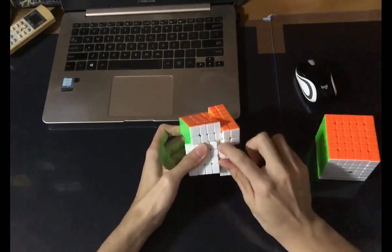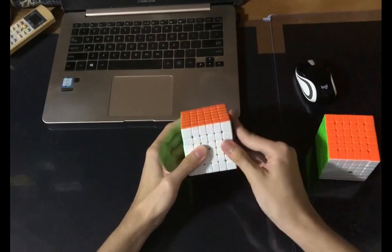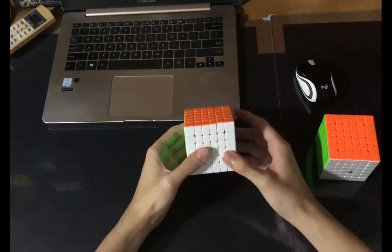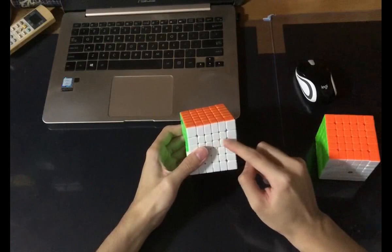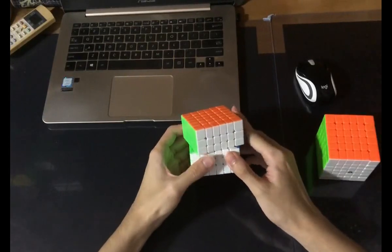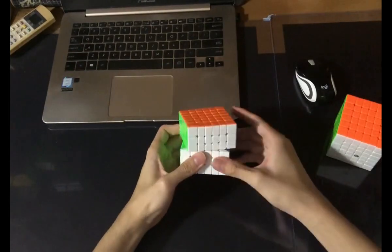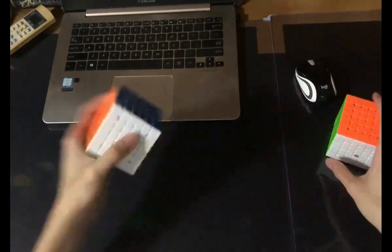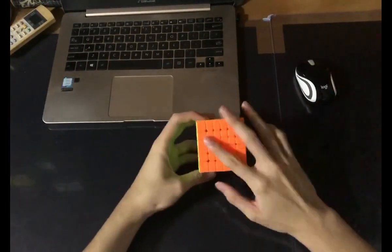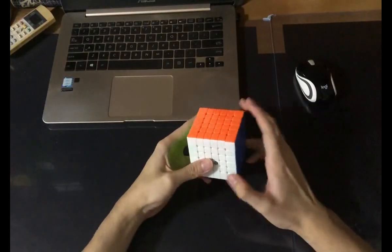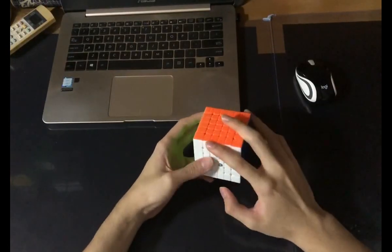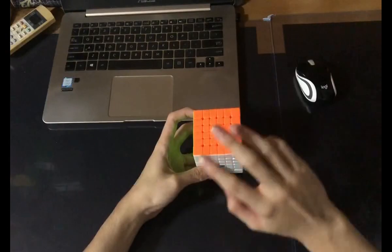On the other hand, I do find that the 2x3 pieces tend to pop out a bit more often on the MGC, whereas on the Shadow I totally don't get a single pop. I can't really force a pop to happen now, but I did get a fair share of it in the solves. I think in terms of pops the Shadow does a better job, and in terms of deforming lockups the MGC does a better job.